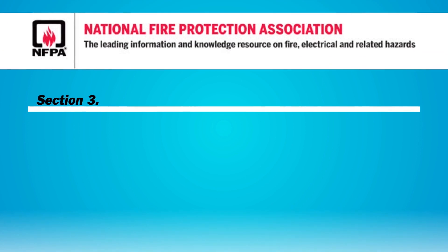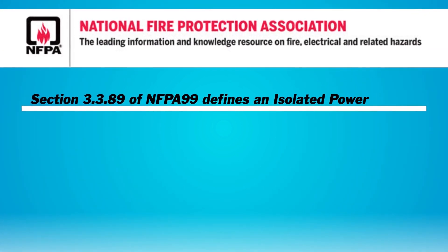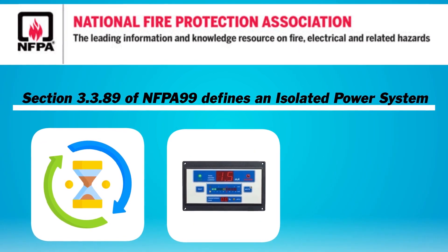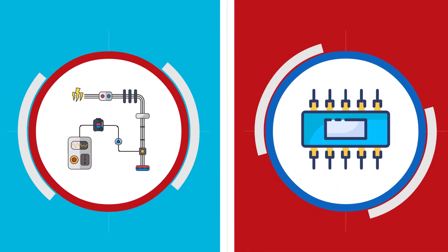Section 3.3.89 of NFPA 99 defines an isolated power system as a system comprising an isolation transformer or its equivalent, a line isolation monitor, and its ungrounded circuit connectors.